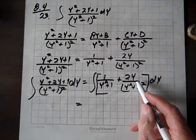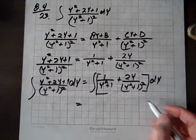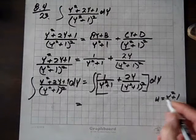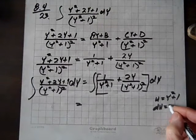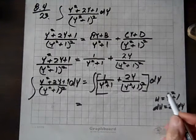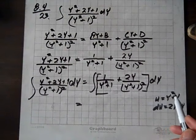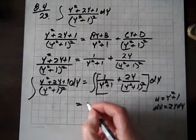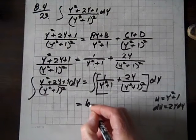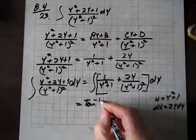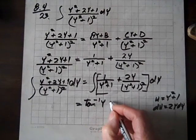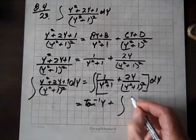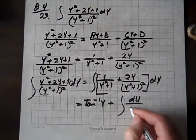But we can do a little u du substitution here, and let me do that quickly. If u equals y squared plus 1, then du equals 2y dy. And notice we have a perfect fit. There's a 2y dy, and u is y squared plus 1. And so what we're going to have here, I'm going to have the inverse tan of y plus the integral of du over u squared.